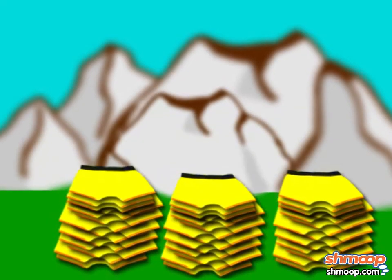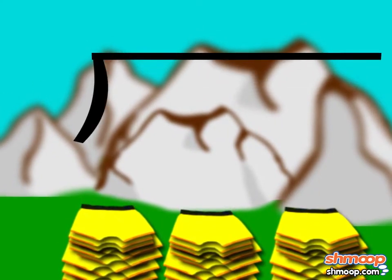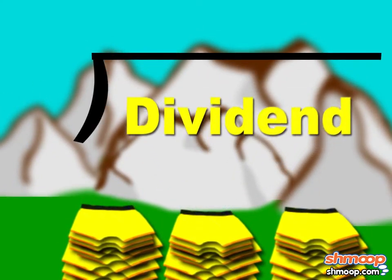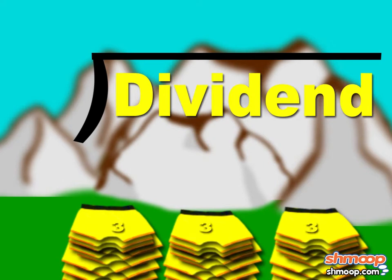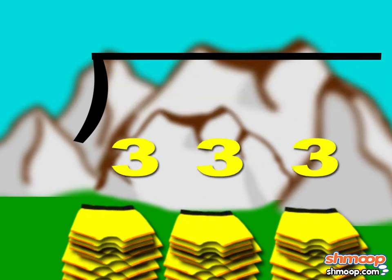To set up the problem, draw your division box. The dividend, or what's getting split up, goes inside the box. This is the 333 pairs of underwear.